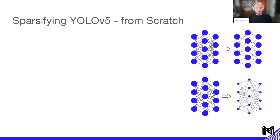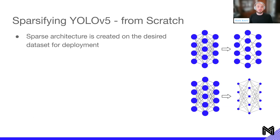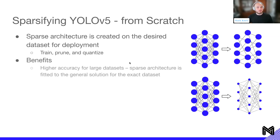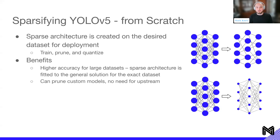Looking at sparsifying from scratch: this is when we take a model and create a sparse architecture on the desired dataset for deployment — training, pruning, and quantizing on that dataset. We prune the fully connected network down and quantize it so activations and weights become smaller. The benefit is higher accuracy for large datasets; for example, pruning on VOC and then trying to transfer to COCO won't work as well because COCO has a lot more information. We can ensure the sparse architecture is fitted to the exact dataset we want, and we can also prune custom models that we haven't pruned yet.